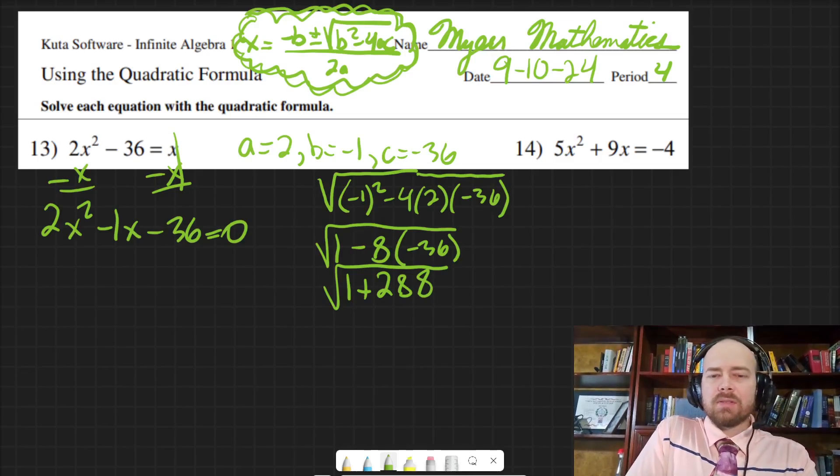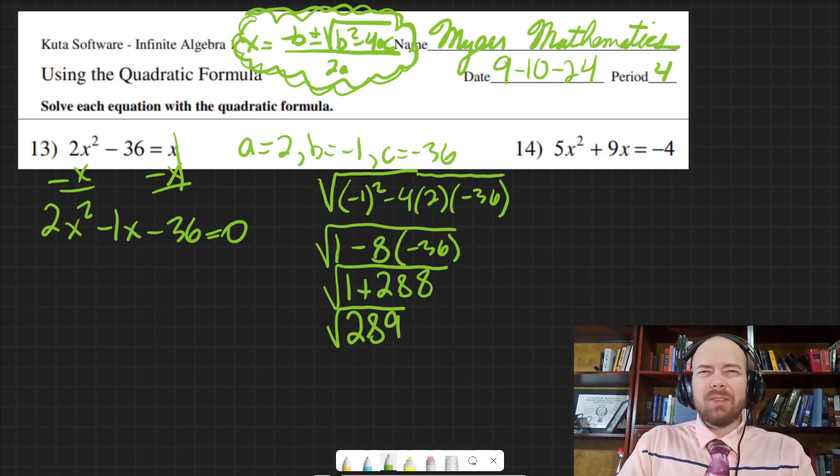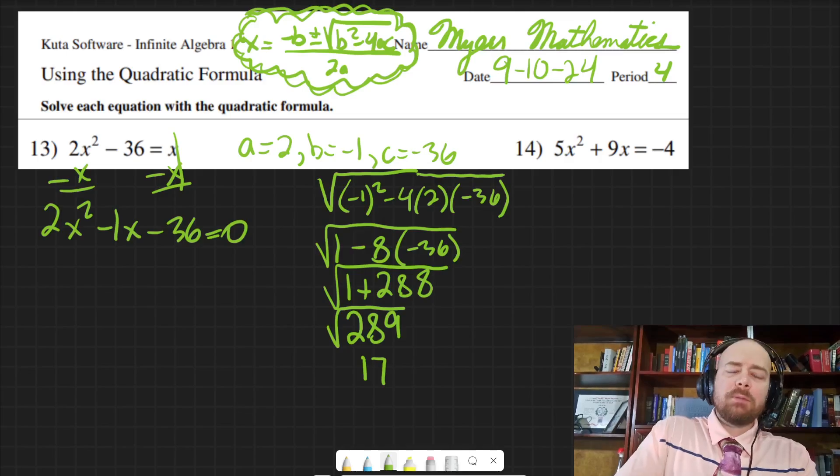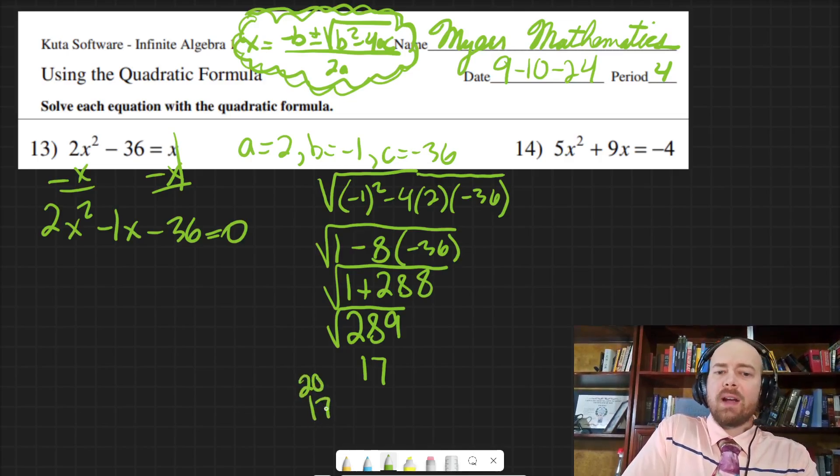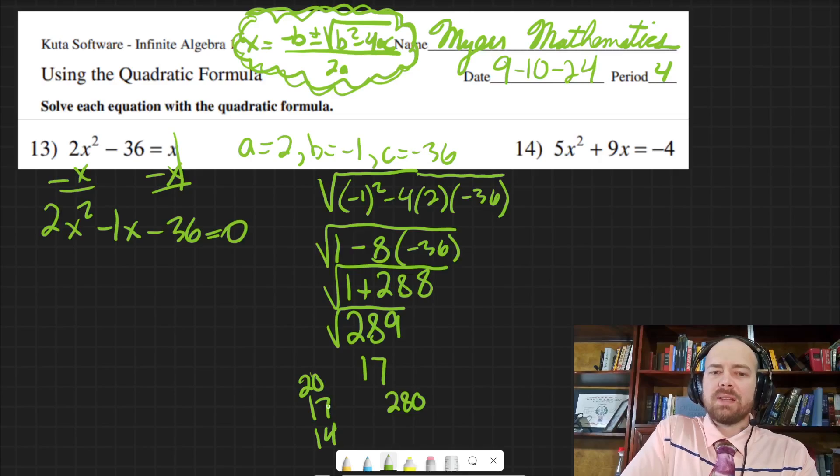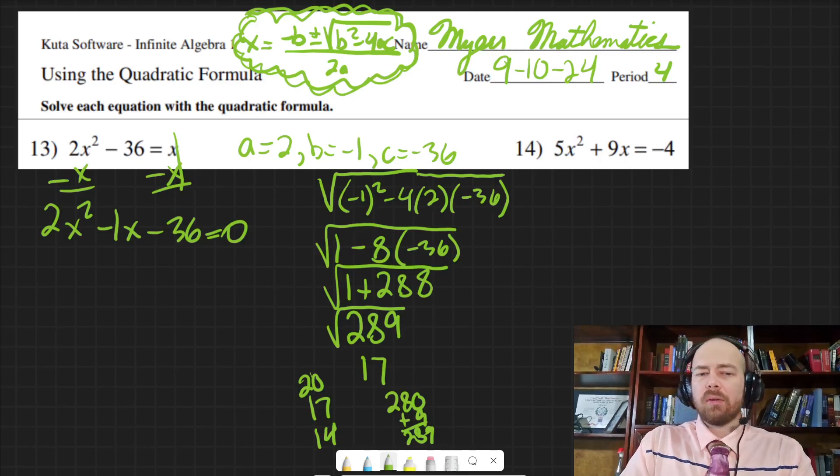And you can also check it by multiplying it by hand. Eight times six is 48. Carry the four. Eight times three is 24. Plus four is 28. 288. So anytime you're doing math in your head, if you're allowed to use a calculator, obviously you want to check it on the calculator. But I would say do both. So that's actually going to be 17, 17 squared. And if you don't have some of your squares memorized, one thing you can do is, in order to check it, you can actually do this little trick.